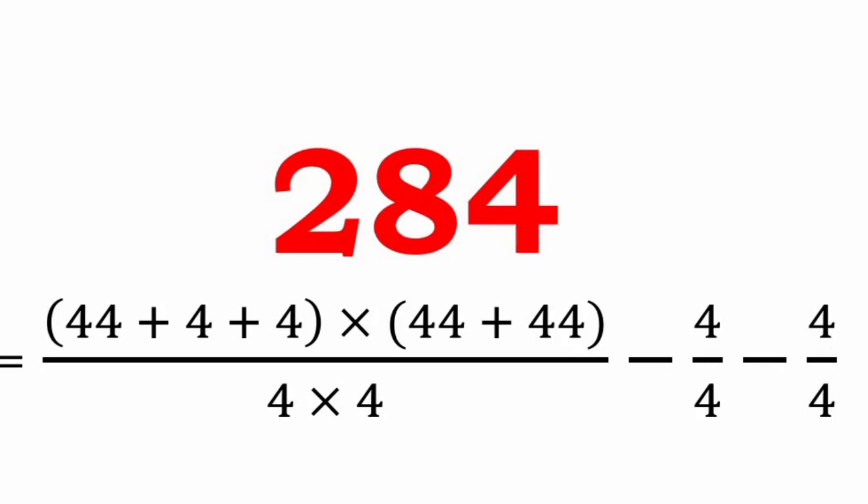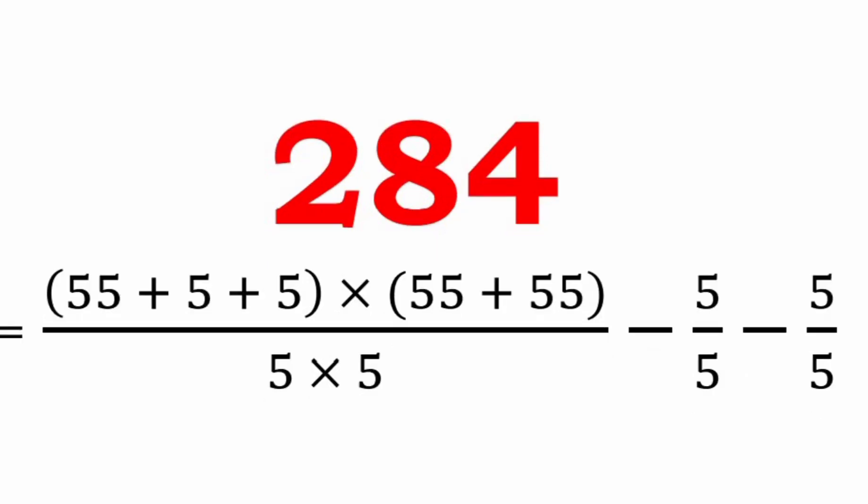Using 4: (44 plus 4 plus 4 into 44 plus 4 into 44 plus 44) whole divided by (4 into 4 minus 4/4 minus 4/4 minus 4/4). The fifth representation is: (55 plus 5 plus 5 into 55 plus 55) whole divided by (5 into 5 minus 5/5 minus 5/5). The digit used here is 5.